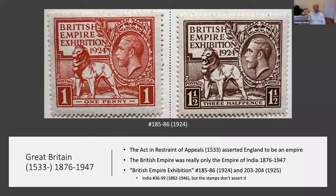Here's the British Empire. When researching this, I found that the Act in Restraint of Appeals issued in 1533 claimed that England is an empire. But the British have never been big about putting that on their stamps. The Indian stamps — which are really the real empire of Britain — never said 'Indian Empire.' That's why I have the question of what kind of crown George was wearing on his head on the stamps. The stamps for the British Empire Exhibition in 1924 and 1925 are the only two British stamps which actually say 'British Empire' on them.